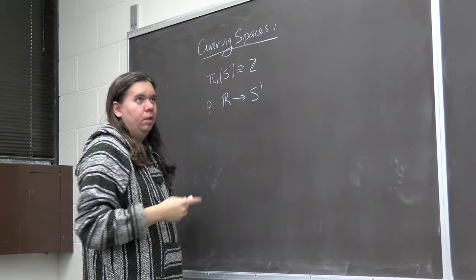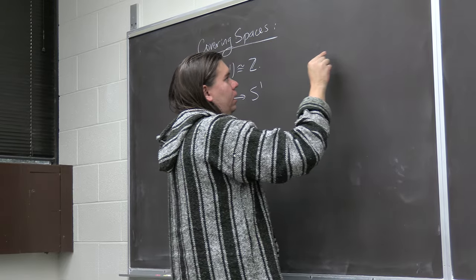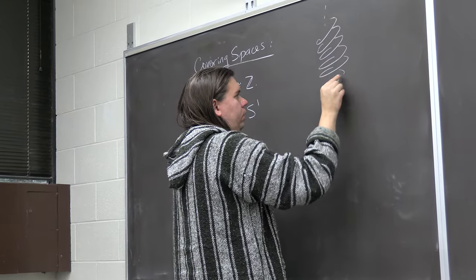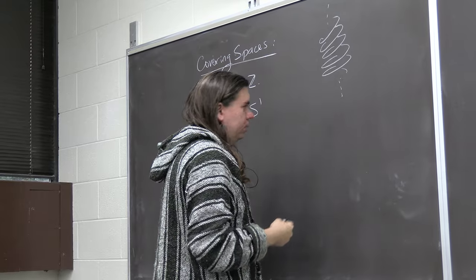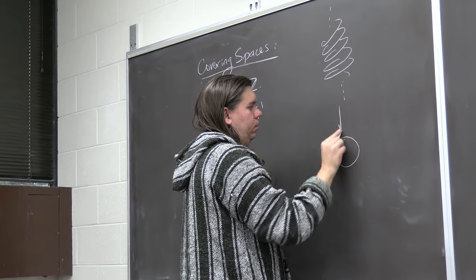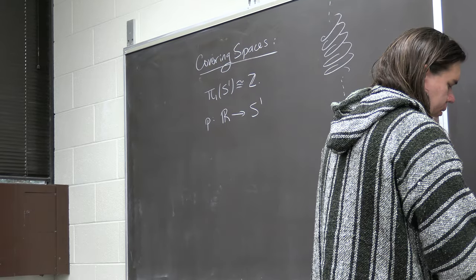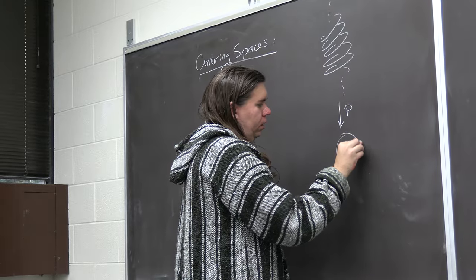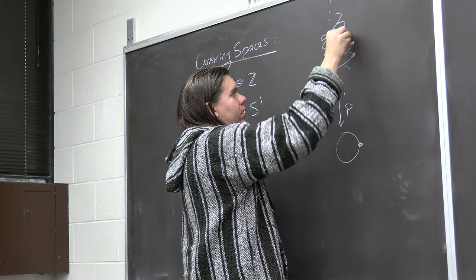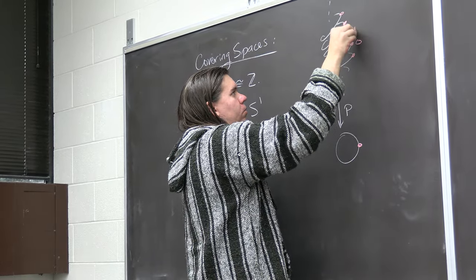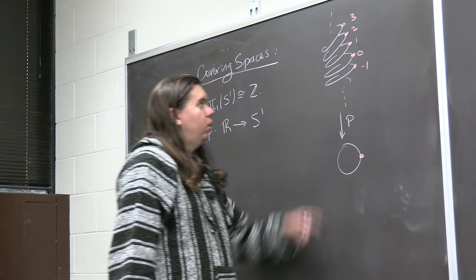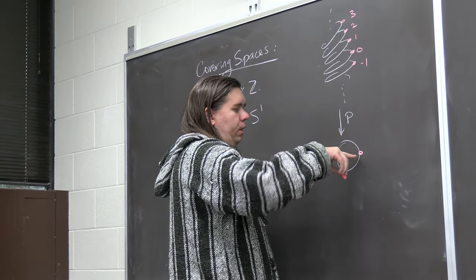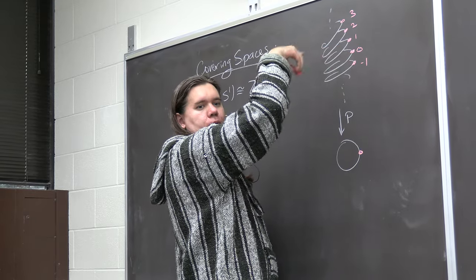We often think of the real numbers as a line, but in this case it helped us to think about it as more like a helix, extending indefinitely in both directions, mapping onto the circle S¹. The preimage of your base point is each integer up here — 0, 1, 2, 3, negative 1, and all the integers map to the base point. As you travel around the circle, it corresponds to traveling from one integer to the next.